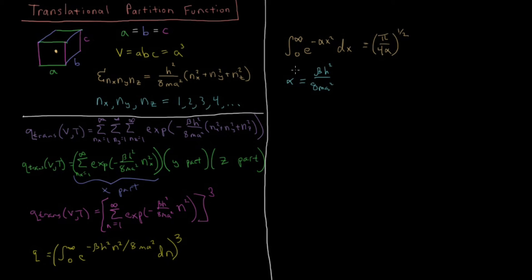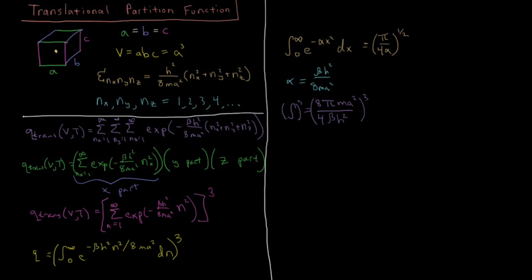Substituting our alpha in, the integral evaluates to the square root of pi times 8ma squared over 4 times beta h squared. The 8 over 4 simplifies to 2. We also have the exponent of one-half from the square root, so when cubed, this becomes the three-halves power. Pulling the factor of a squared to the three-halves power gives a cubed, which equals volume.